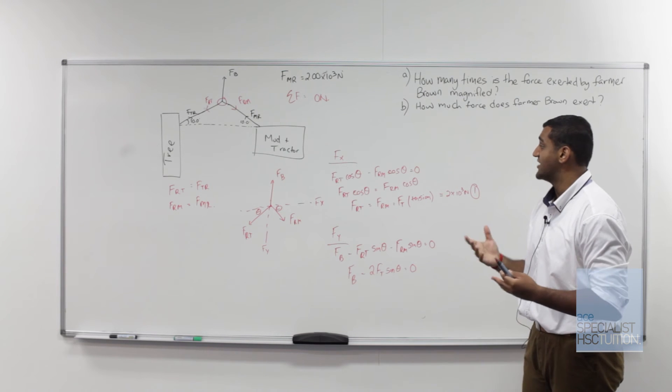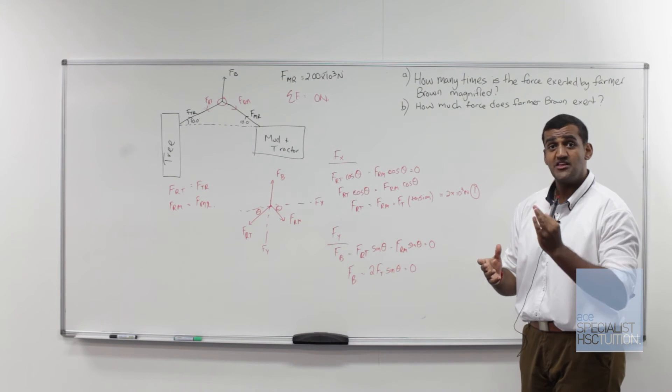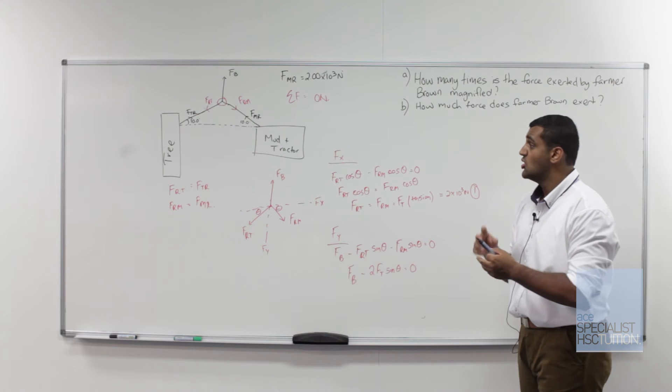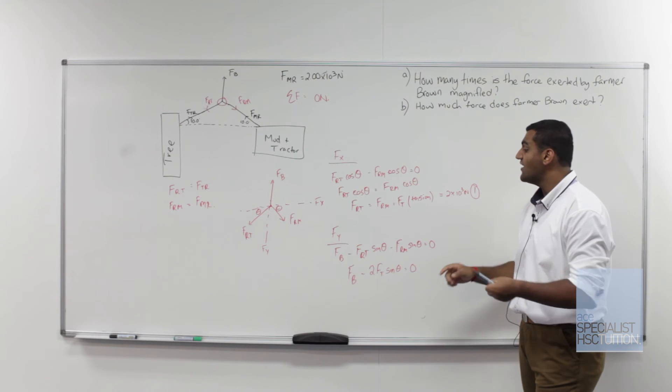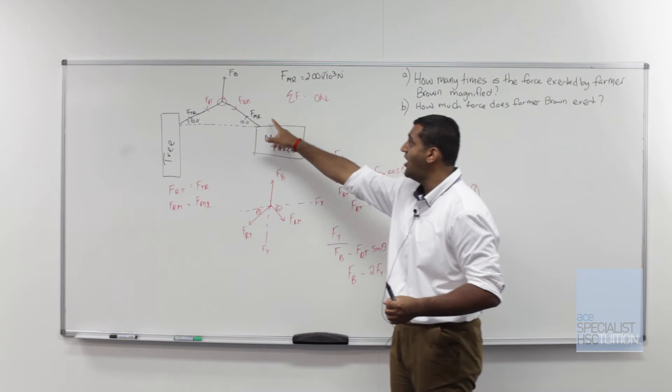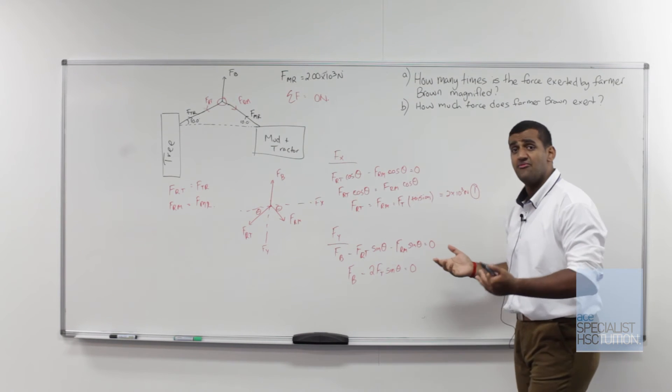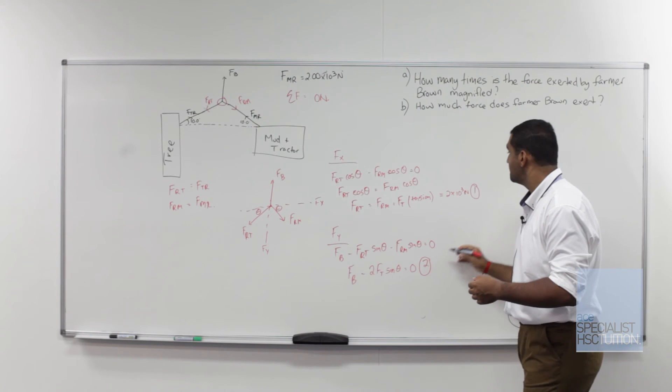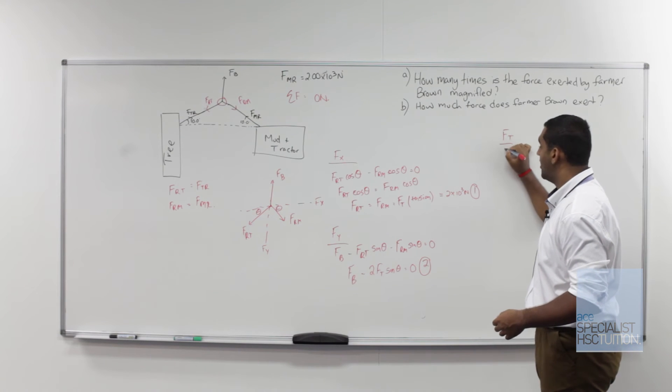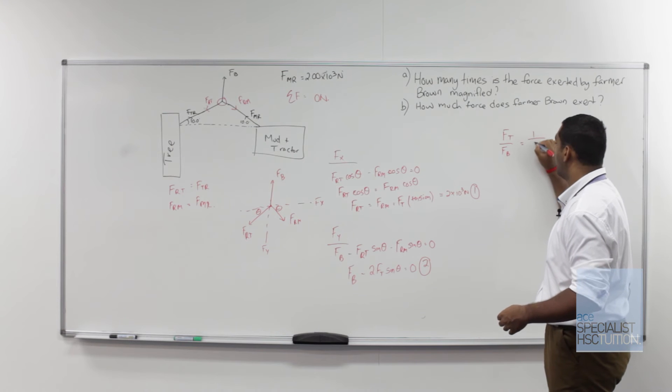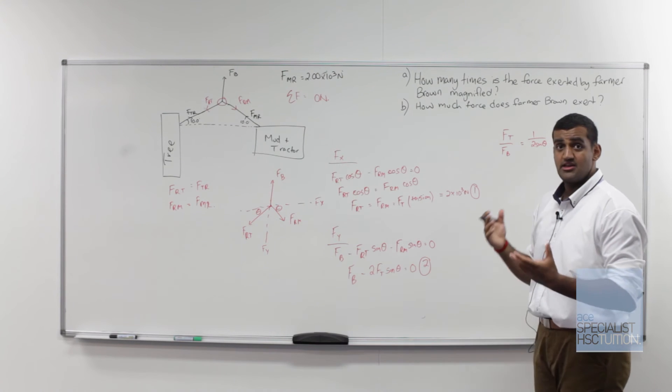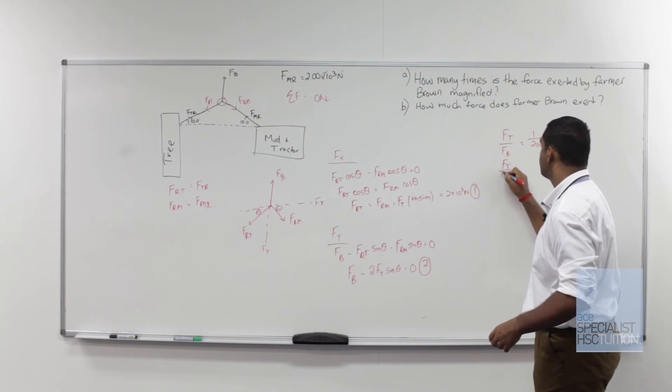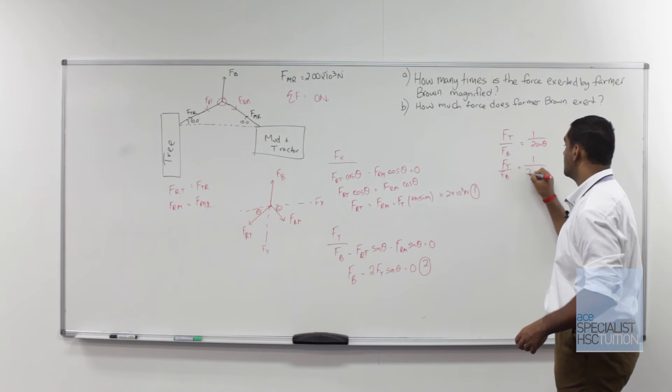Now let's look at what the question actually wants us to find. The question is actually in two parts. The first part asks us to find how many times the force exerted by Farmer Brown is magnified. So what it's actually asking us to find here is the ratio between FMR and FB. That's the same for us as finding the ratio between FT and FB. So if we rearrange the second equation here, we can get that FT on FB is equal to 1 on 2 sin theta. Now if we sub in our theta which is 10 degrees, we get FT on FB equals 1 on 2 sin 10 degrees which gives us 2.879.